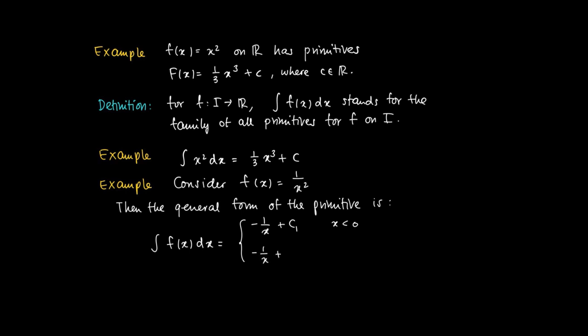And we can take a different constant c₂ on the right-hand side. So we get, as a primitive, -1/x + c₂ for x > 0. Now we use the following convention: when we write the integral of f(x)dx, we still write it as -1/x + c.